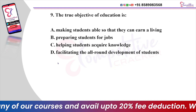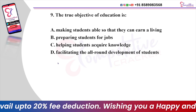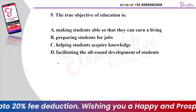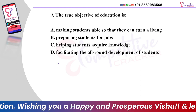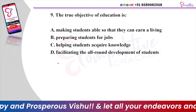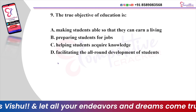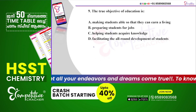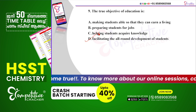The true objective of education is: Option A, making students able so that they can earn a living. Option B, preparing students for jobs. Option C, helping students acquire knowledge. Option D, facilitating the all-round development of students. And the right answer is Option D.